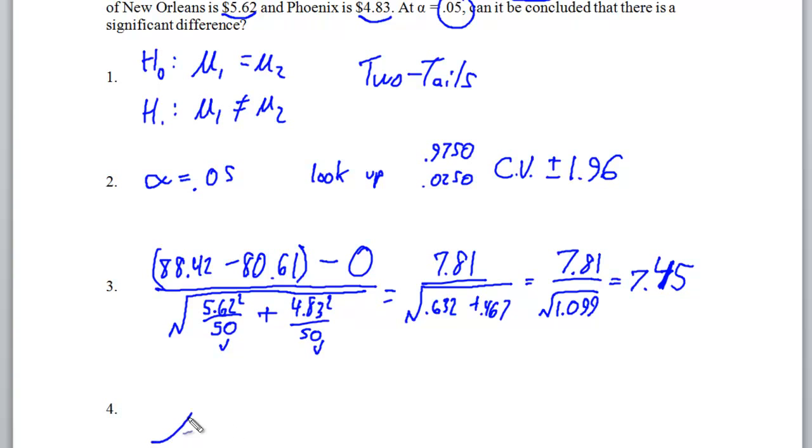Okay, so we get our picture here. Our picture was, we had a critical value of negative 1.96 and 1.96. Is our test value inside one of these critical zones? And the answer is, yeah, 7.45 is way inside the critical region. So, and if we would have went Phoenix minus New Orleans, and then flip-flopped everything backwards, we would have got a negative 7.45 instead of positive, because of the numerator being negative instead of positive, we'd still get the same result.